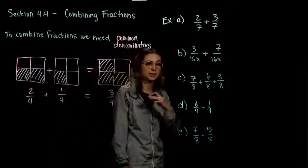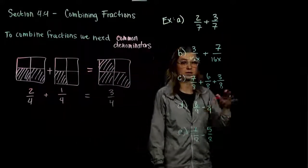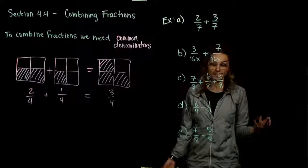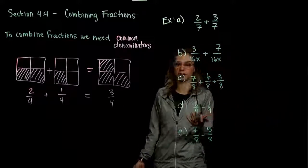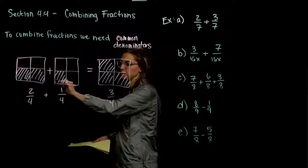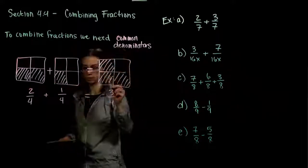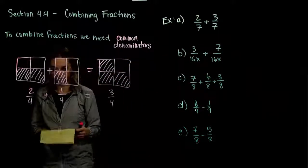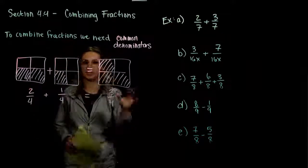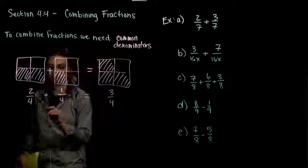When they're divided up into the same number of pieces, we have the same denominator. We just add across the top — two and another one gives us three. And it doesn't matter how many pieces it's divided up into.